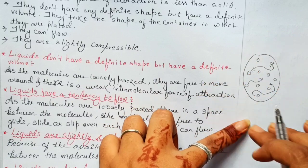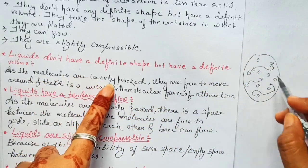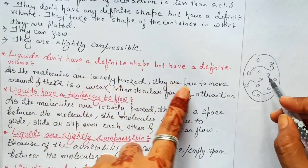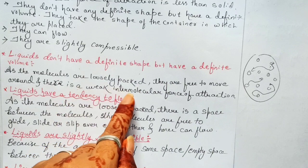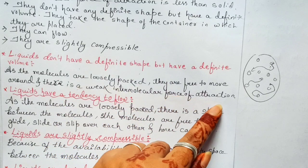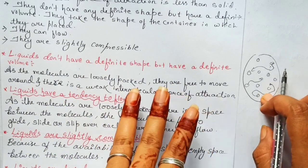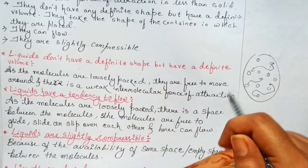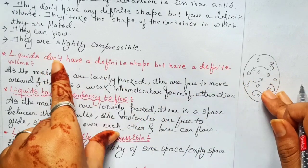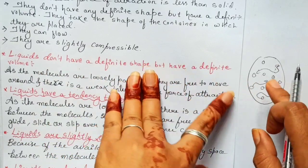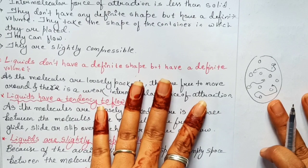As the molecules are loosely packed, they are free to move, and there is a weak intermolecular force of attraction. Because of these three things — loose packing, freedom of movement, and weak attraction — liquids don't have any definite shape. But they do have a definite volume.